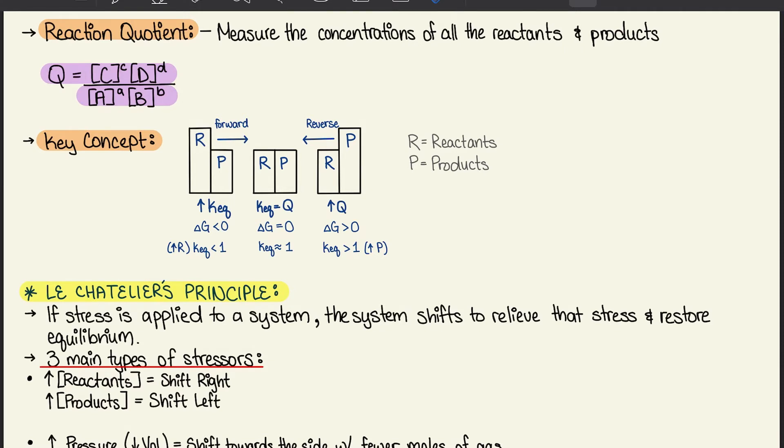And high reactants will give us where the KEQ is less than 1. And that helps initiate the forward reaction. When both reactants and products are at equal concentration, the KEQ is equal to Q, which was a reaction quotient. Our delta G is equal to 0, and the KEQ value is approximately 1. And that means they're at equilibrium.